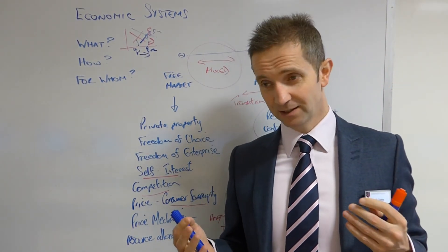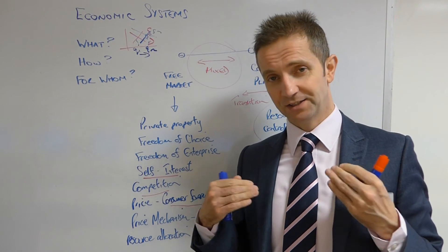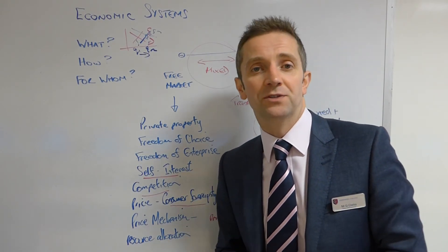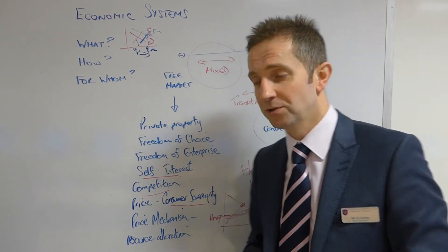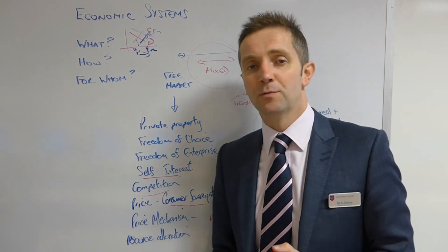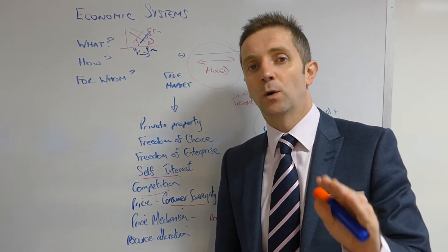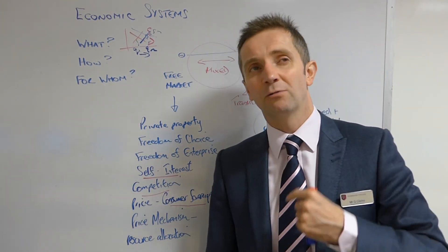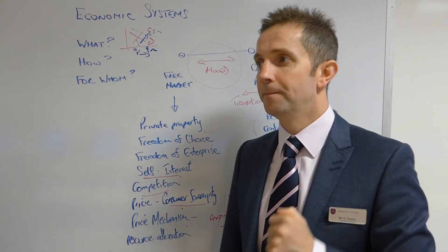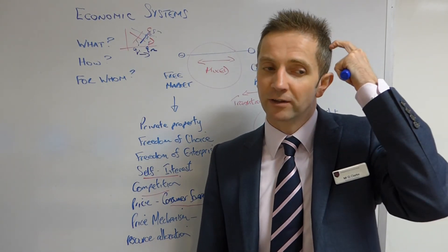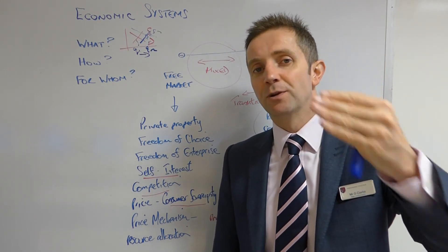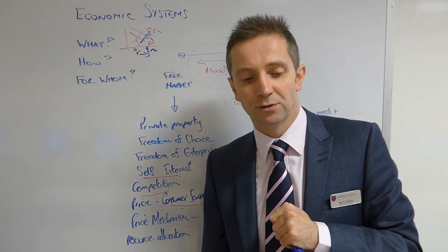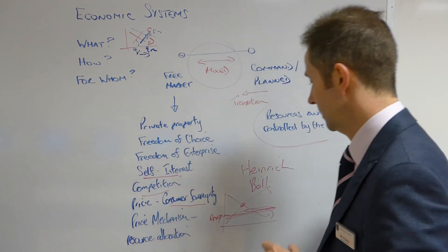Remember, your maximum price diagram is where P-max is beneath the equilibrium. The price mechanism we've talked about for resource allocation is totally different in the planned or command economy. How are resources allocated? Well, as a central governing authority, I will determine which goods and services are produced. I will determine where you go to school, what job you do, where you live, how much money goes into health, education, etc.